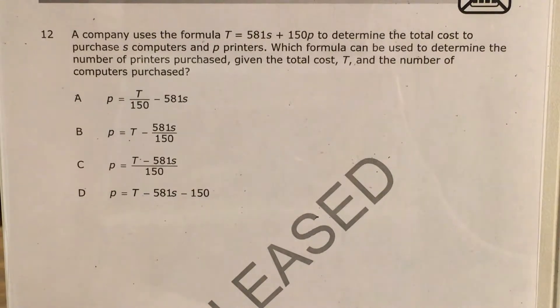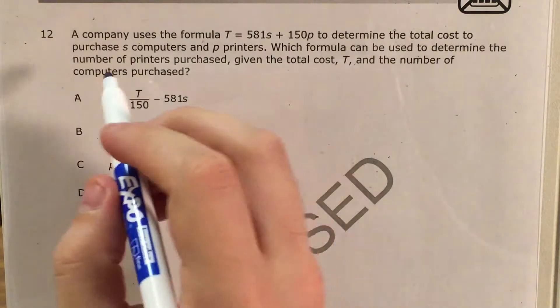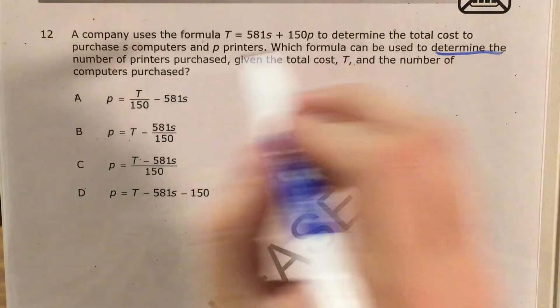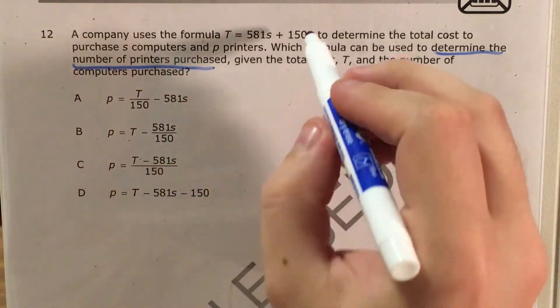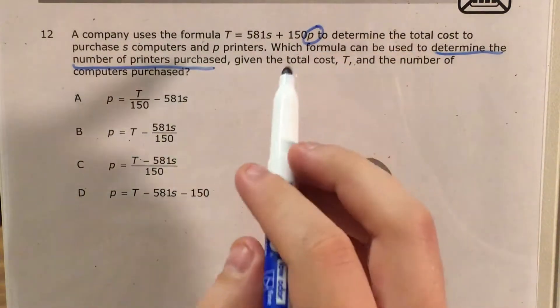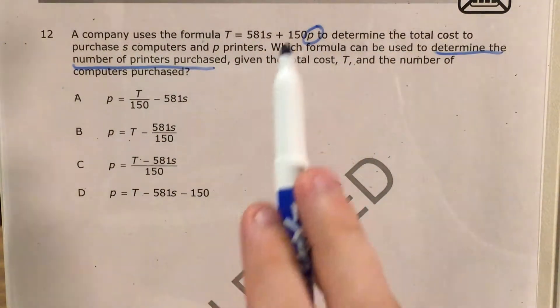And these look scary, but there is a trick to solving these that I will actually just go through right here. So basically, we need to know exactly what we're trying to find. And since the problem says determine the number of printers purchased, I know that the variable, the letter I'm most interested in, is P for printers.